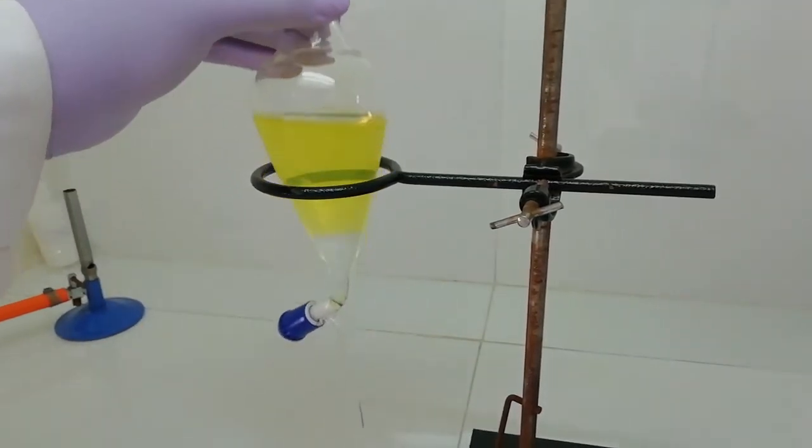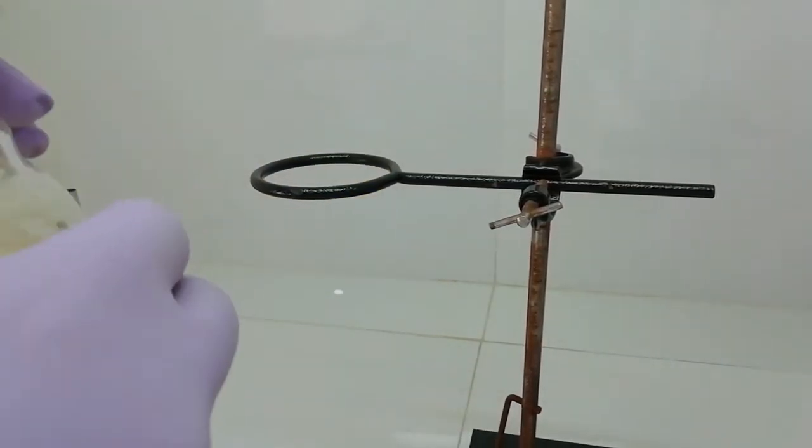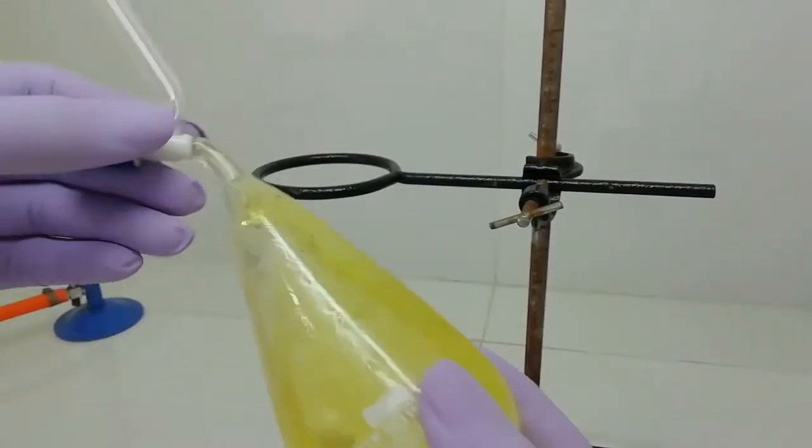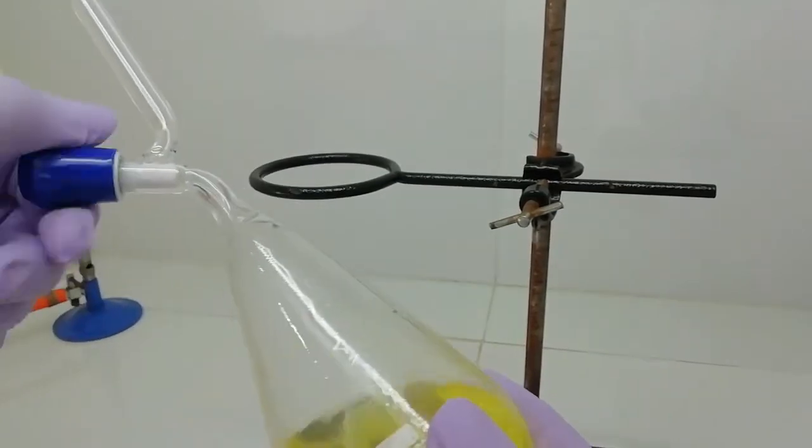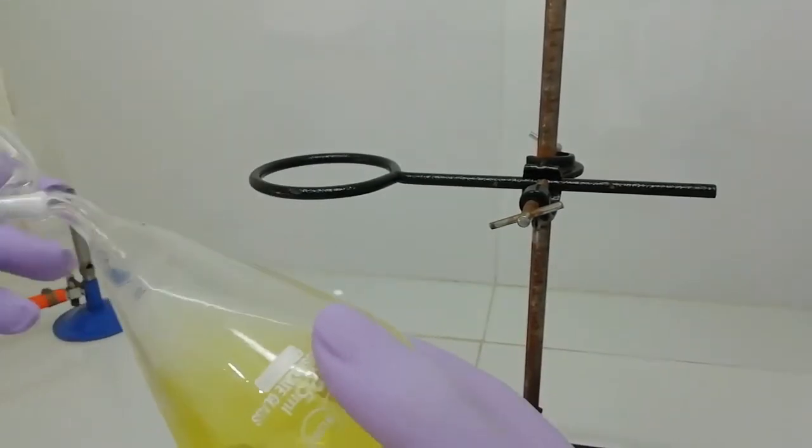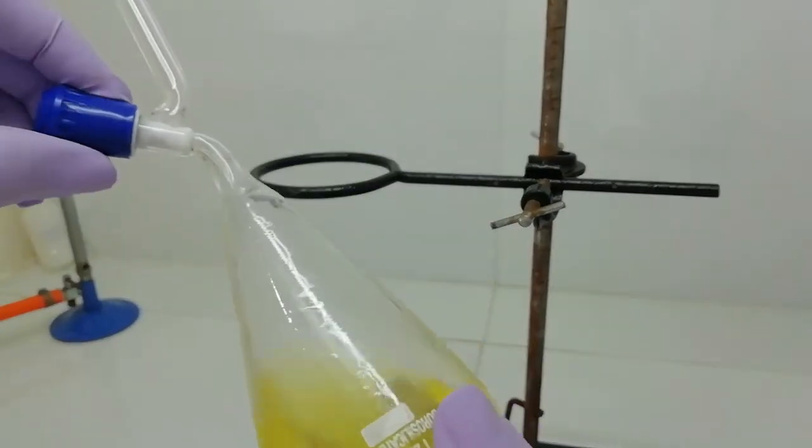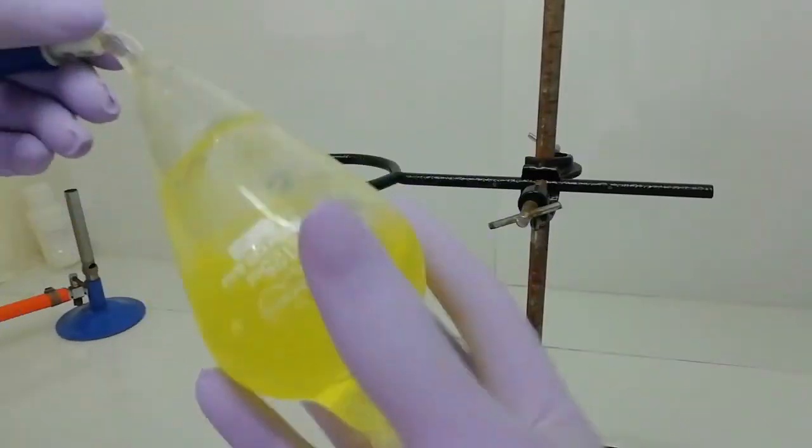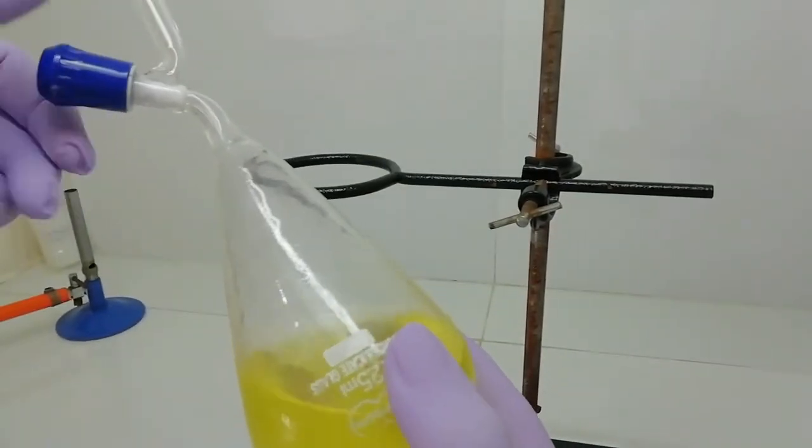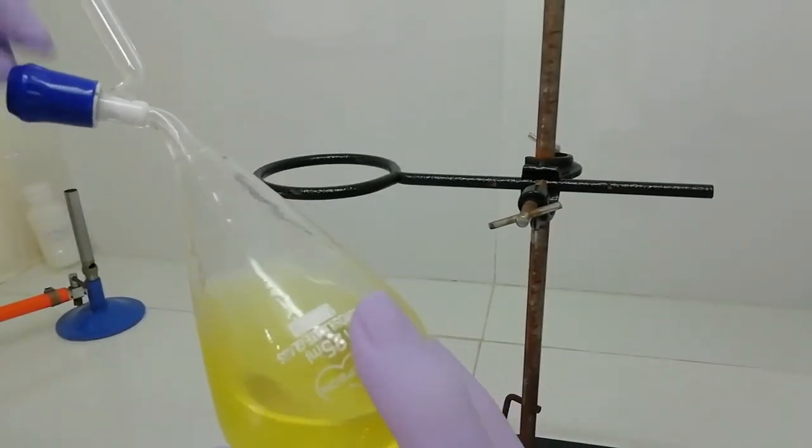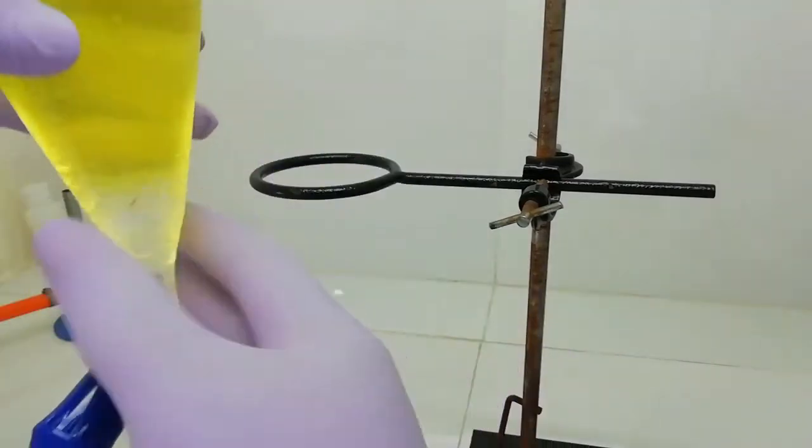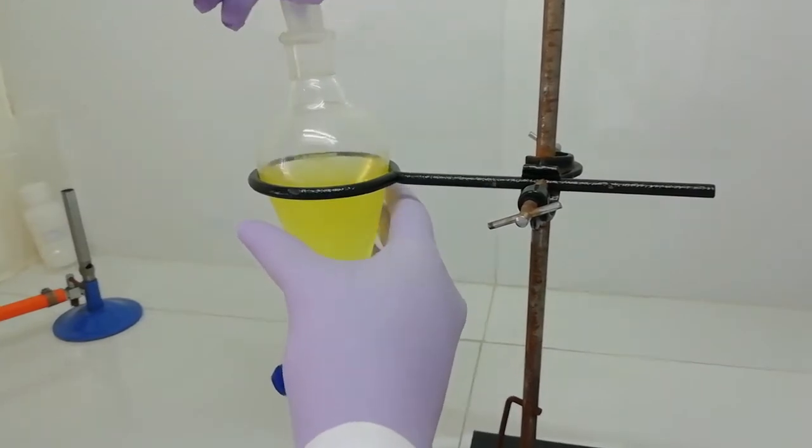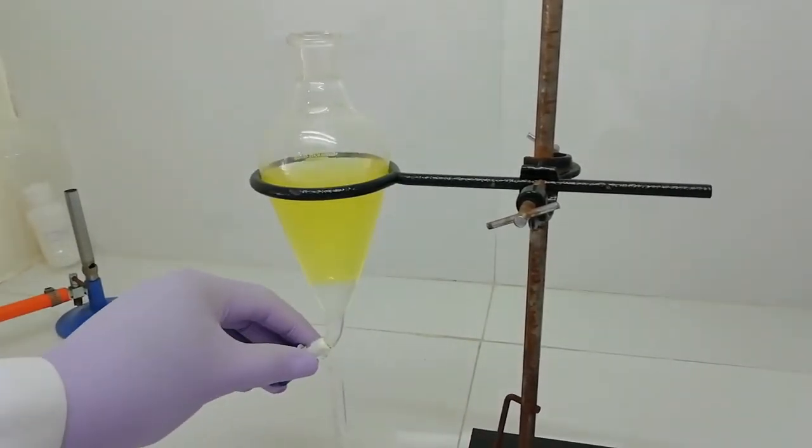Now we need to cap and shake the separating funnel, and we should release the pressure build-up inside. That's enough for shaking, and we need to keep this for the separating layers.